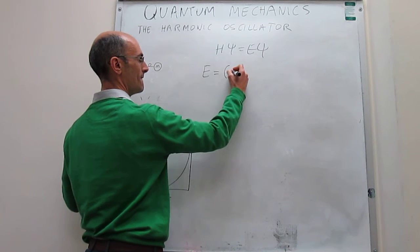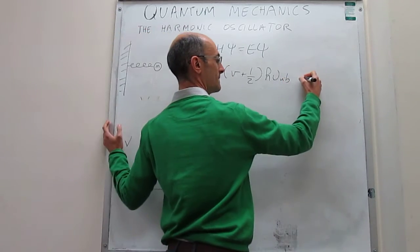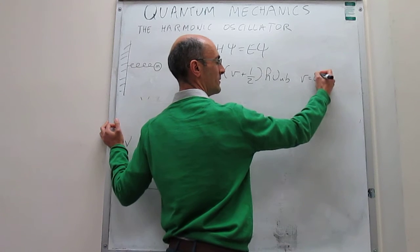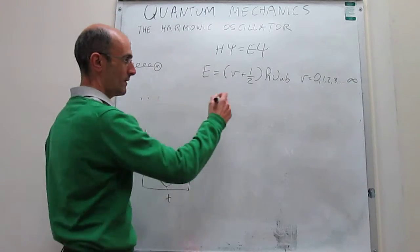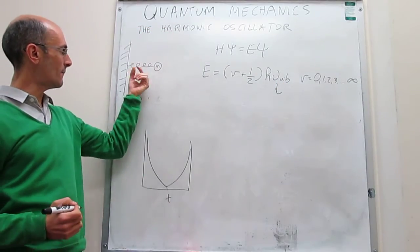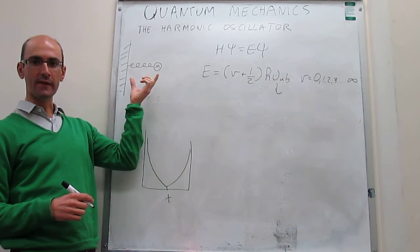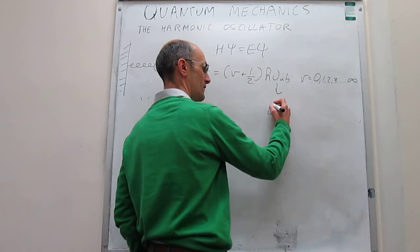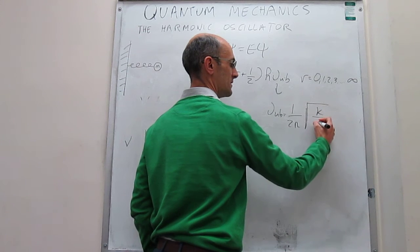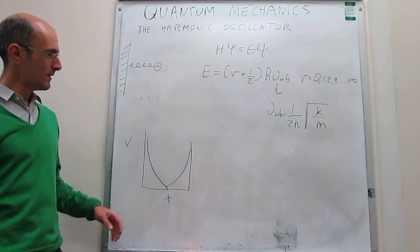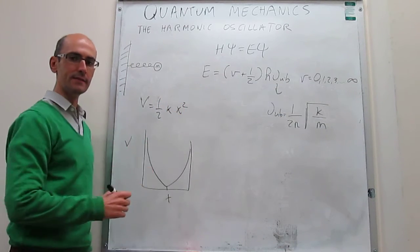The energy of the system is: E equals (v + one-half) times h times ν_vib, where v is a quantum number — an integer that goes from zero all the way to infinity. The vibrational frequency ν_vib is how many times per second the oscillator moves, and it equals one over 2π times the square root of the force constant divided by the mass. This force constant is the same one in the potential energy expression and measures how stiff the spring is.